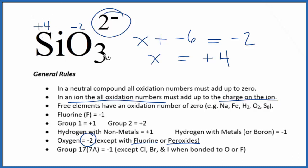If we add these numbers up, 3 times minus 2, that's minus 6. Minus 6 plus 4, that gives us this minus 2, because the charge on the ion equals the oxidation numbers of all the elements in the compound. This is Dr. B, thanks for watching.